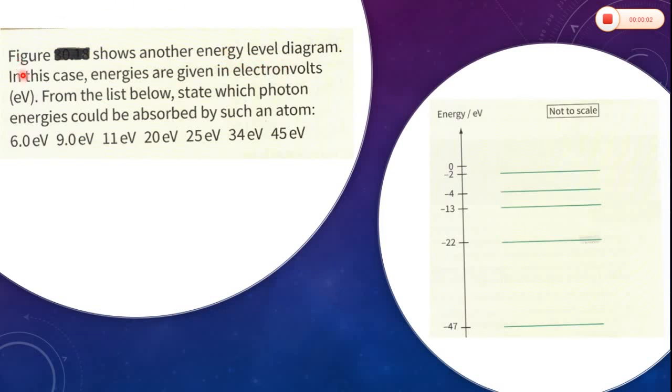Question number two. The figure shows another energy level diagram. In this case, energies are given in electron volts. From the list below, state which photon energies could be absorbed by such an atom: 6 eV, 9 eV, 11 eV, 20 eV, 25 eV, 34 eV, and 45 eV.